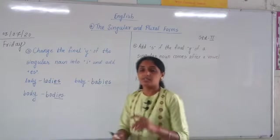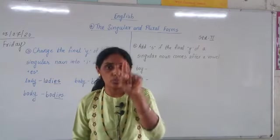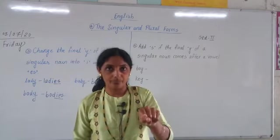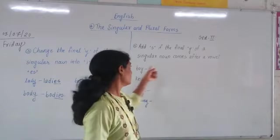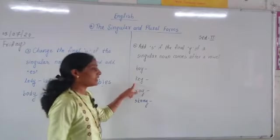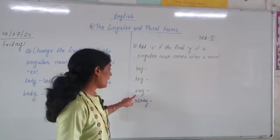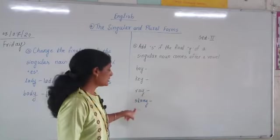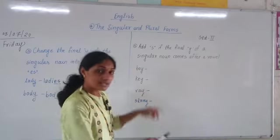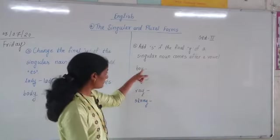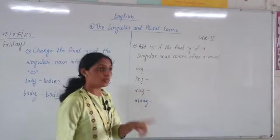Now, if the singular noun ends with 'Y', look at these examples: boy, key, ray, story — all words ending with 'Y'. You need to check the letter that comes before 'Y' in each word.